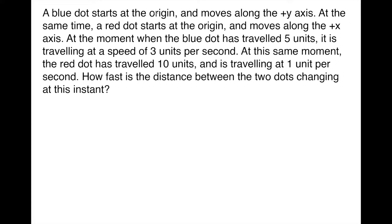So let's look at the prompt. We see a blue dot starts at the origin, it's moving along the plus y-axis. At the same time, a red dot starts at the origin and is moving along the plus x-axis. Now at the moment when the blue dot has traveled 5 units, it's traveling at a speed of 3 units per second. Likewise, at the same moment, the red dot has traveled 10 units and it's traveling at 1 unit per second. The question we're being asked is: how fast is the distance between the two dots changing at this instant?